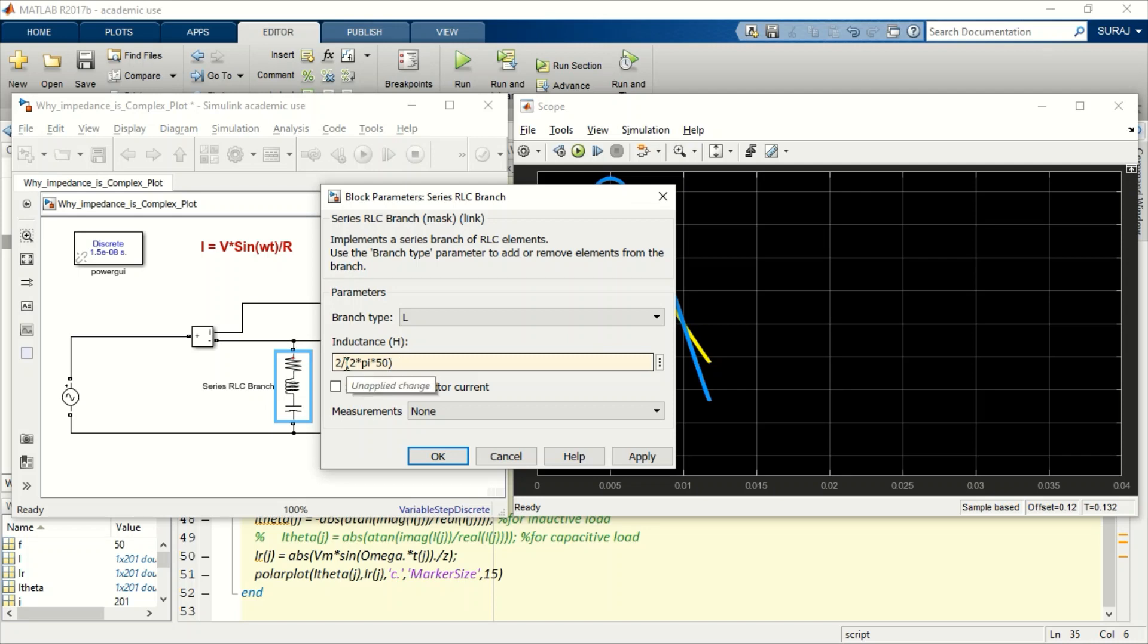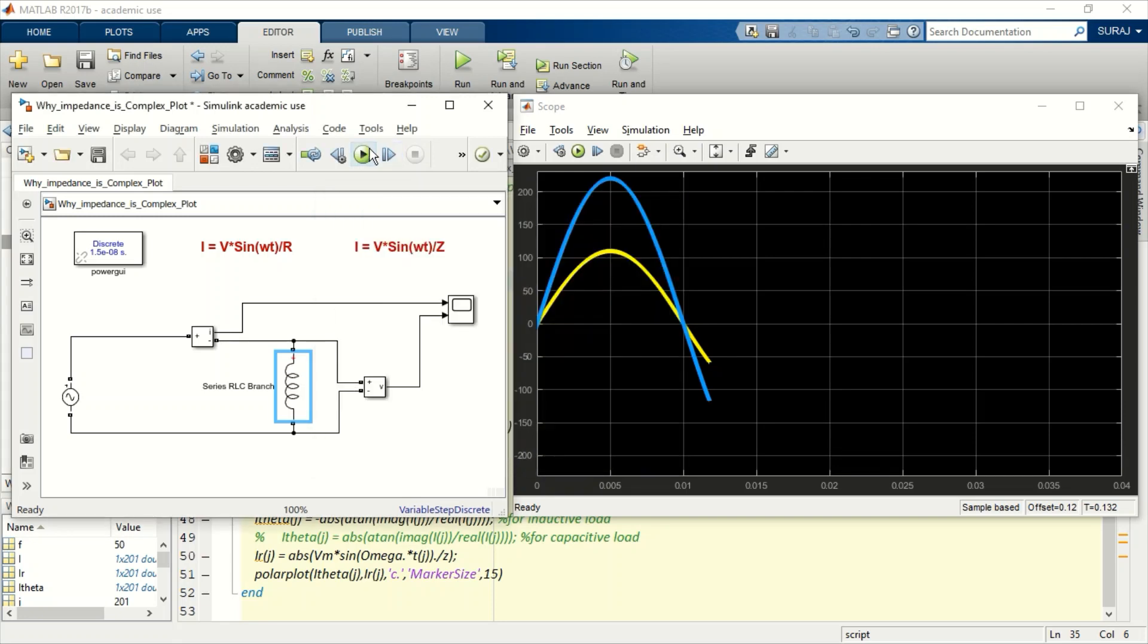I'm writing 2 pi into 50 in the denominator. When it calculates the total reactance, the value will be 2, so to make the calculation easier. Basically, the reactance is 2 in this circuit.